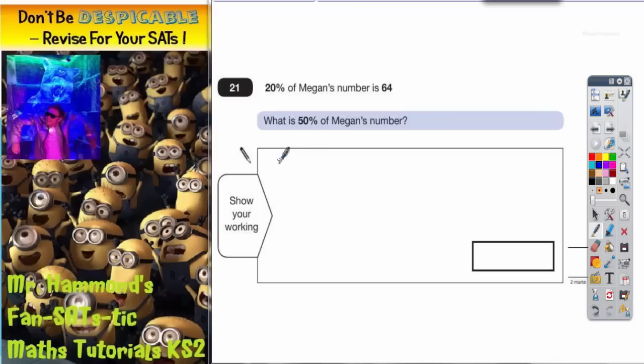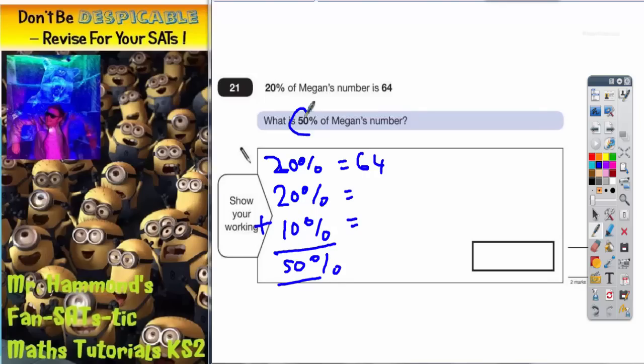You can start by building it up. Start with what you know: you know that 20% is 64. You can do another 20%, and then you can do 10%, because 20% + 20% + 10%, if you add them together, will give you your 50%, and that's what we're trying to get.